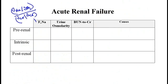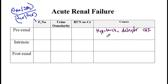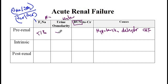Now let's go over the summary table. Pre-renal disease is seen with hypotension, dehydration, congestive heart failure, renal artery stenosis, excess diuresis, or vomiting. Since kidney function is normal, the kidney increases reabsorption of BUN, water, and sodium. Therefore fractional excretion of sodium is less than 1%, urine osmolarity increases to more than 500, and BUN to creatinine ratio is more than 20.